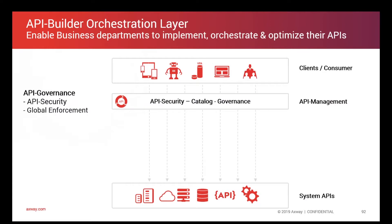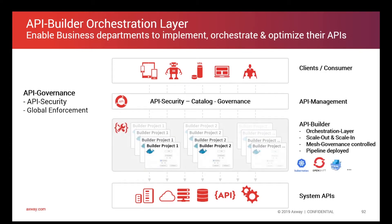The challenge many customers have is that they have a number of system APIs which provide access to data, but those APIs are not very business oriented. They are quite often very technical, and exposing those APIs directly to consumers is not ideal because they may be hard to understand, hard to maintain, and so on. That's why it makes sense to put some kind of orchestration layer in between the system of record APIs and your API management governance layer.